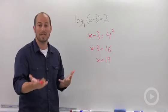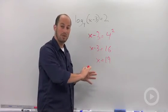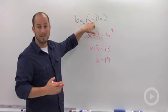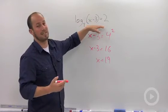Now the last thing we have to do is check. Make sure this actually can go into our equation. We plug 19 in. 19 minus 3 is 16. Log base 4 of 16 is in fact 2.